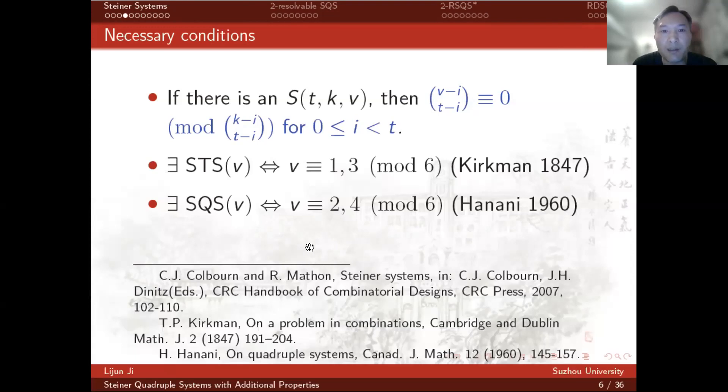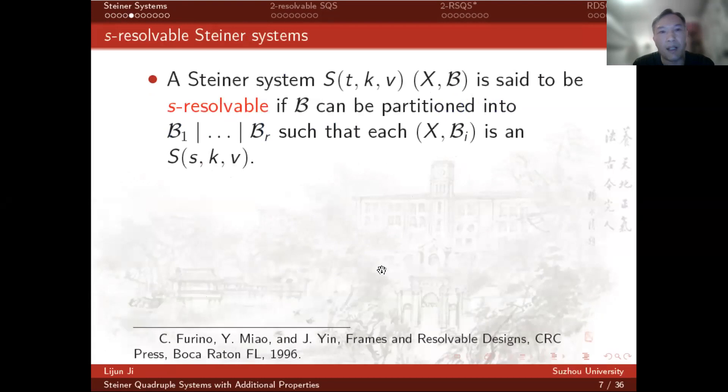For more results on Steiner systems, we can look them up in the Handbook of Combinatorics. A Steiner system is said to be s-resolvable if the block set can be partitioned into B_1 to B_r such that each pair (X, B_i) is a Steiner system of strength s.